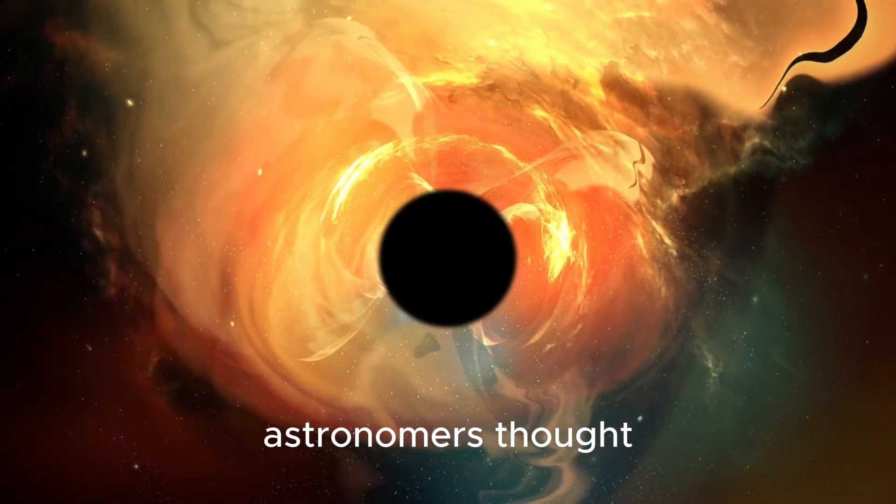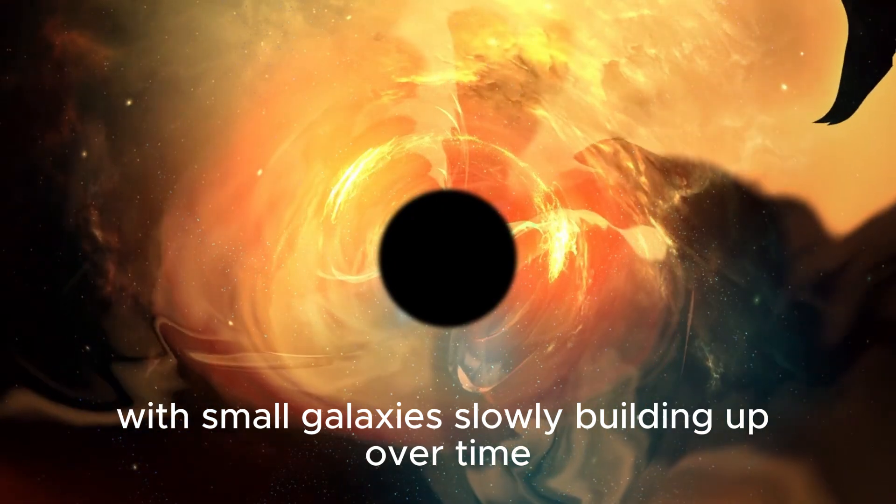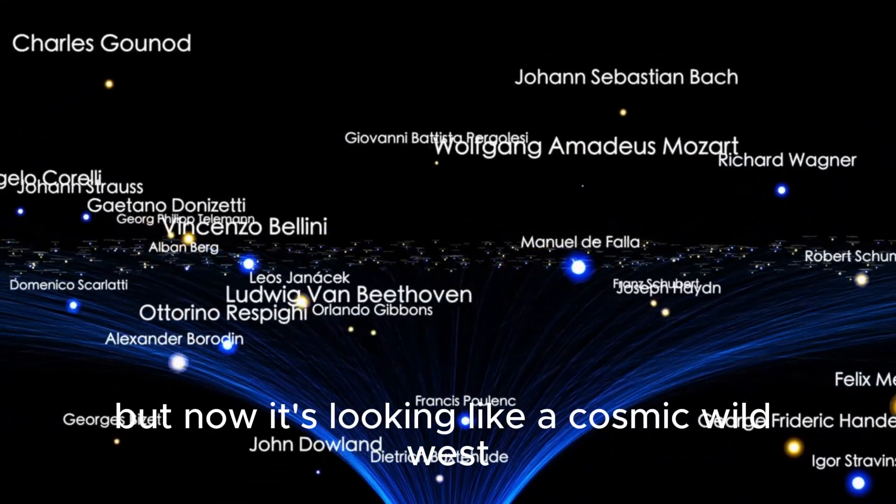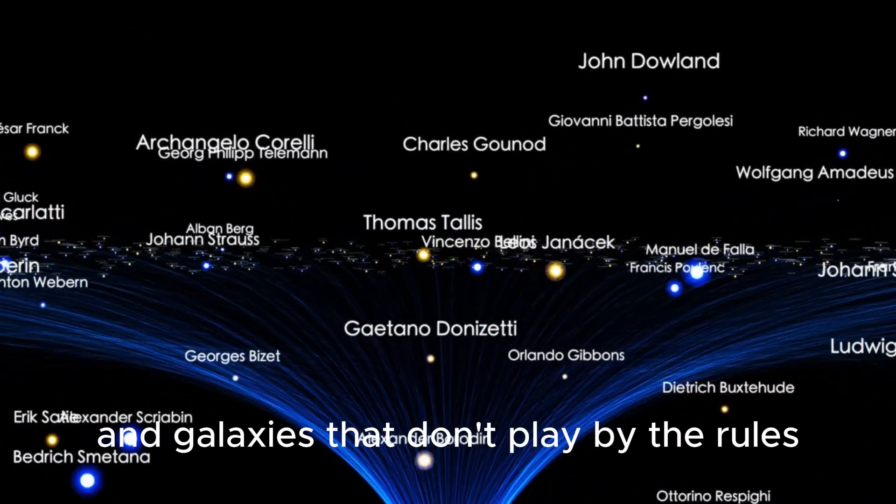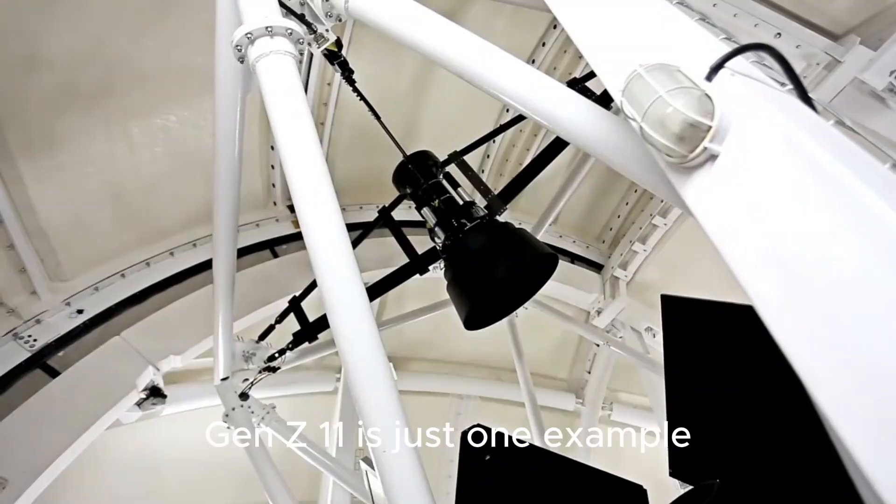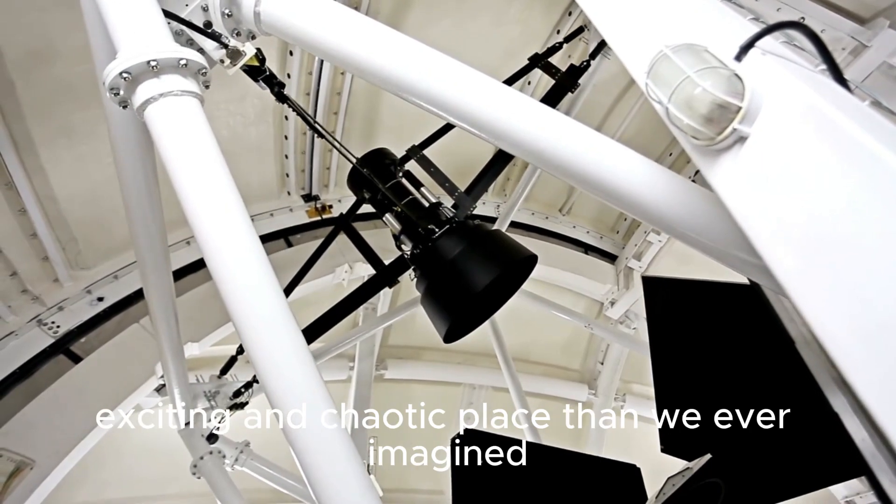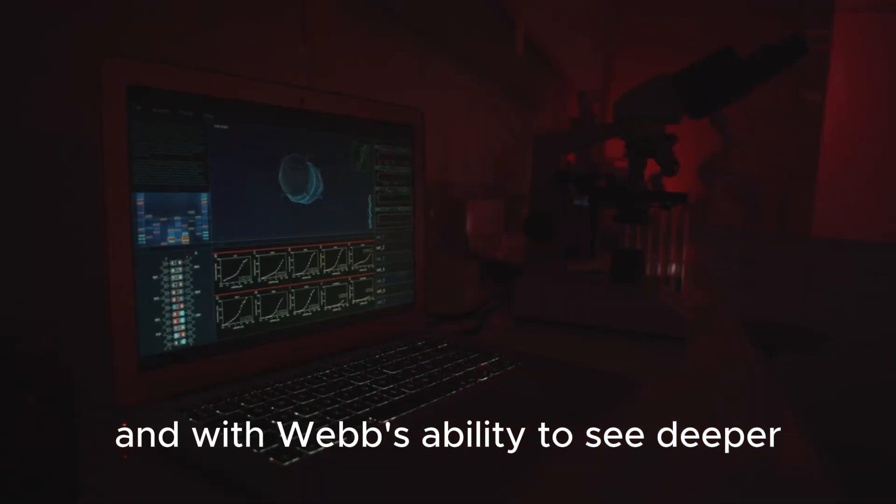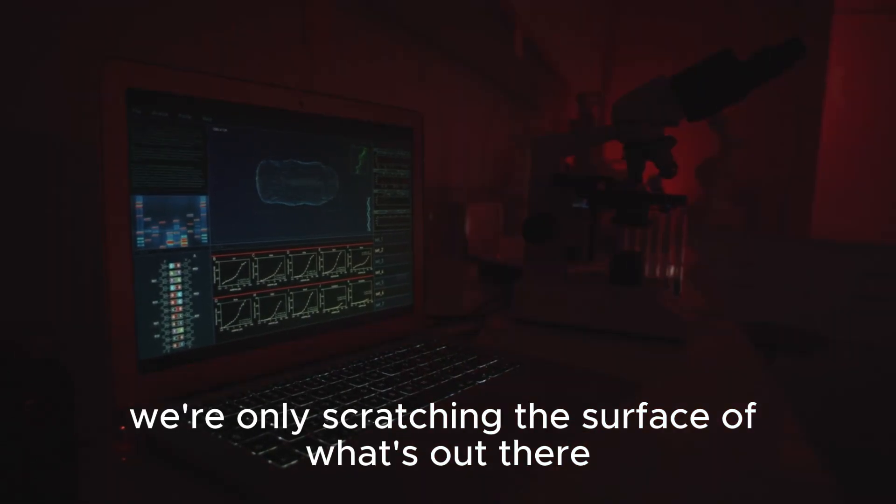Before Webb, astronomers thought the early universe was a relatively simple place, with small galaxies slowly building up over time. But now it's looking like a cosmic wild west, full of massive black holes, intense star formation, and galaxies that don't play by the rules. GNZ-11 is just one example, but it's a loud one. It's telling us that the universe was a far more exciting and chaotic place than we ever imagined. And with Webb's ability to see deeper and clearer than ever before, we're only scratching the surface of what's out there.